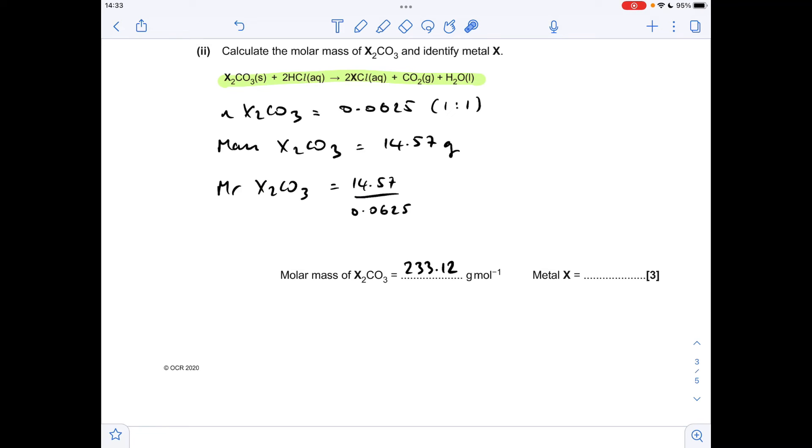To identify what metal X is, we need to work out its MR. The first thing I'm going to do is subtract the MR of CO3, which is 60. So that means X2 has a mass of 173.12. So we'll divide that by 2 and get the MR of 1X. That's coming out at 86.6. Now we've got to be really careful now, because on the periodic table, you've got two atoms that are very close to that. So we've got rubidium, which is 85.5, and we've got strontium at 87.6.